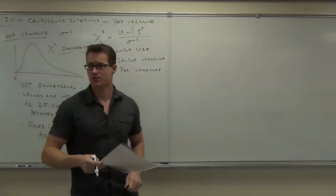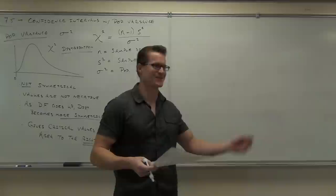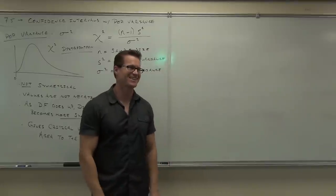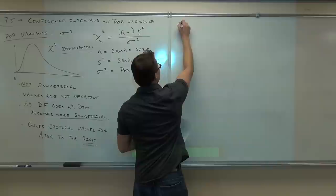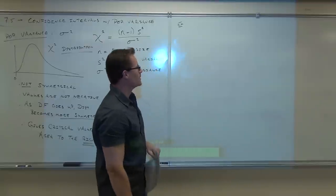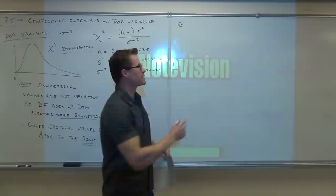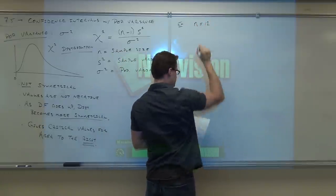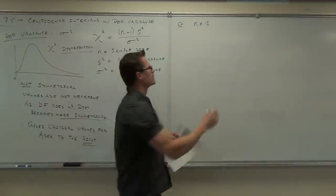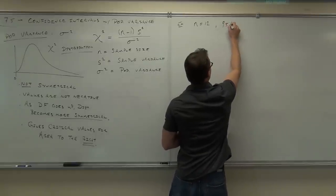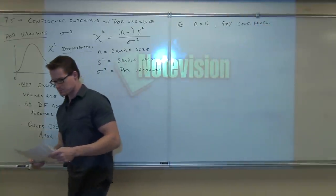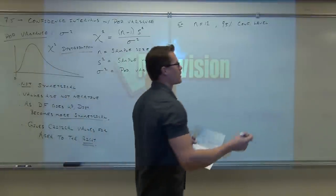Now, let's learn how to find those critical values. Let's suppose we have a sample size of 12 and we're dealing with a 95% confidence level. We're back to the idea of confidence intervals, and I want to find the critical values based on a chi-square distribution.